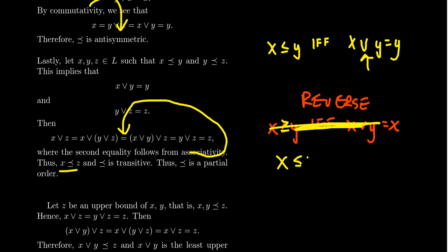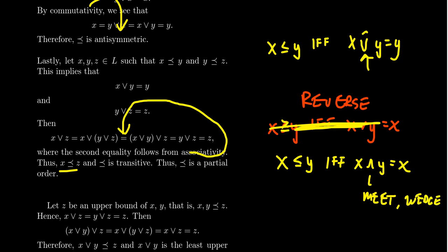If you want to say X ≤ Y, you would actually use the meet operation — this symbol, which comes to a point downward — and say X meet Y equals X. The meet is sometimes called a wedge. Some people call the join symbol a V and this downward symbol a wedge. In LaTeX, the join symbol is backslash vee and the meet symbol is the wedge. We will typically call these meet and join. When it comes to a semi-lattice there's really no distinction between the two — they can be equivalent. But when it comes to a lattice, we will distinguish between what a meet is and what a join is, because there's a harmony that lives there.